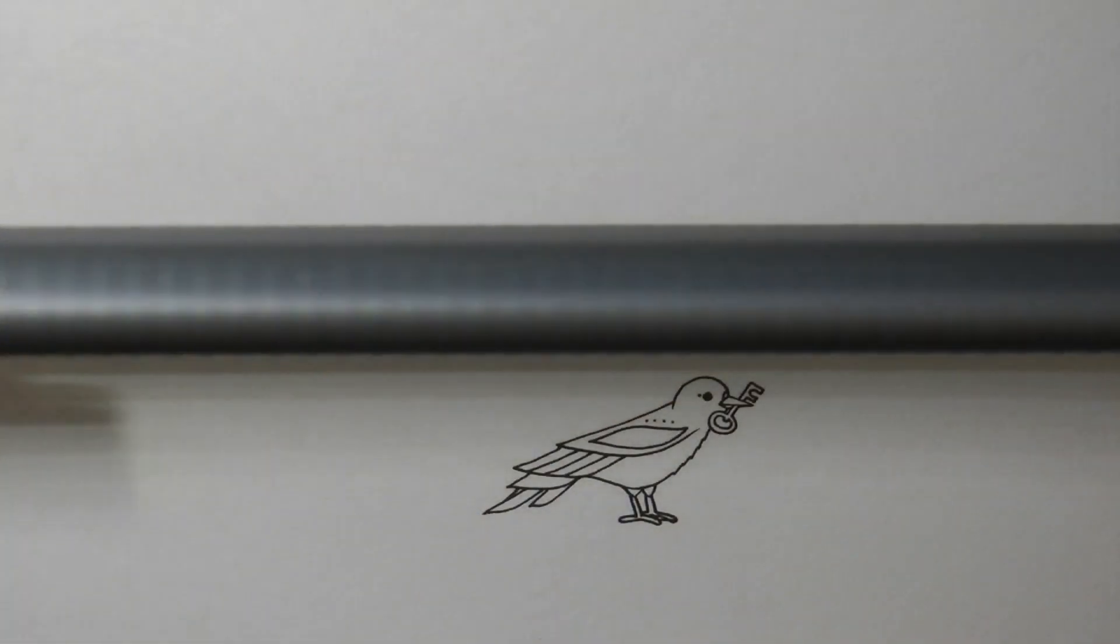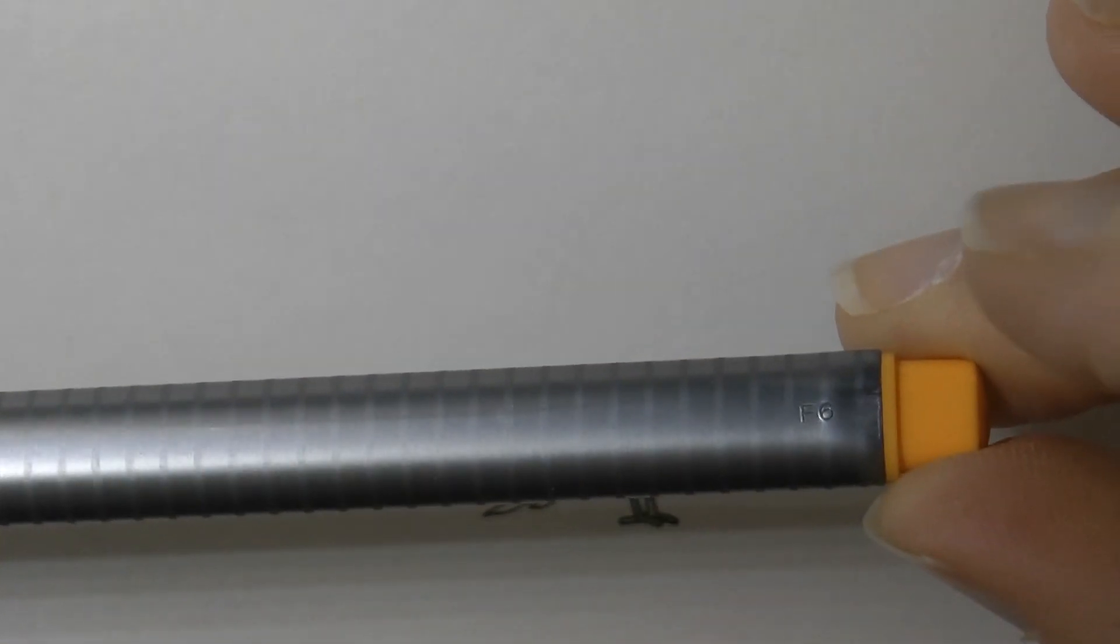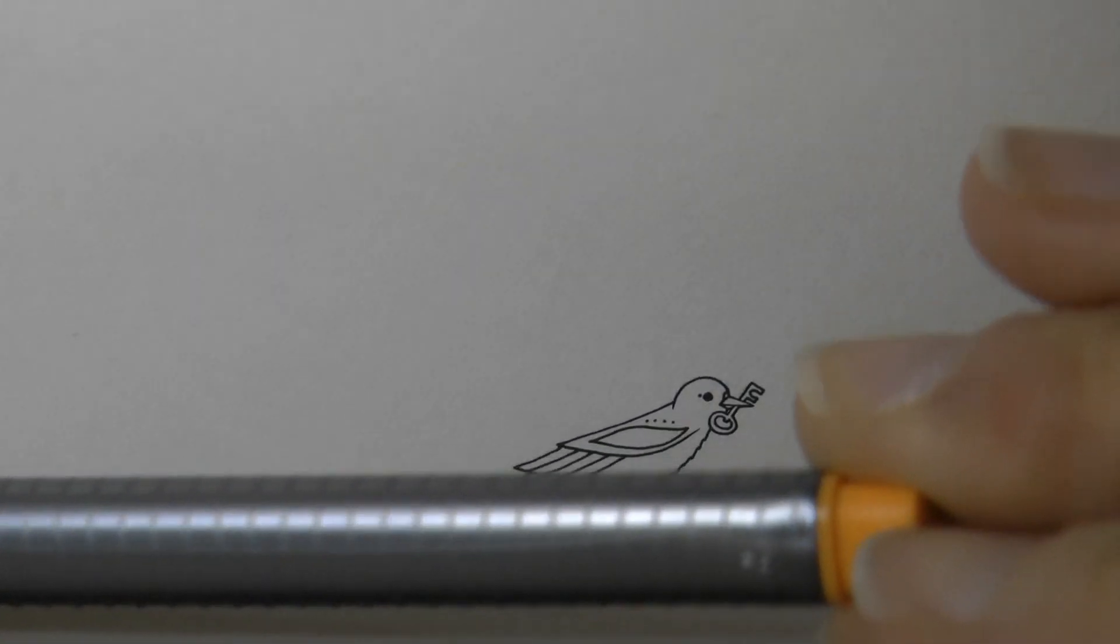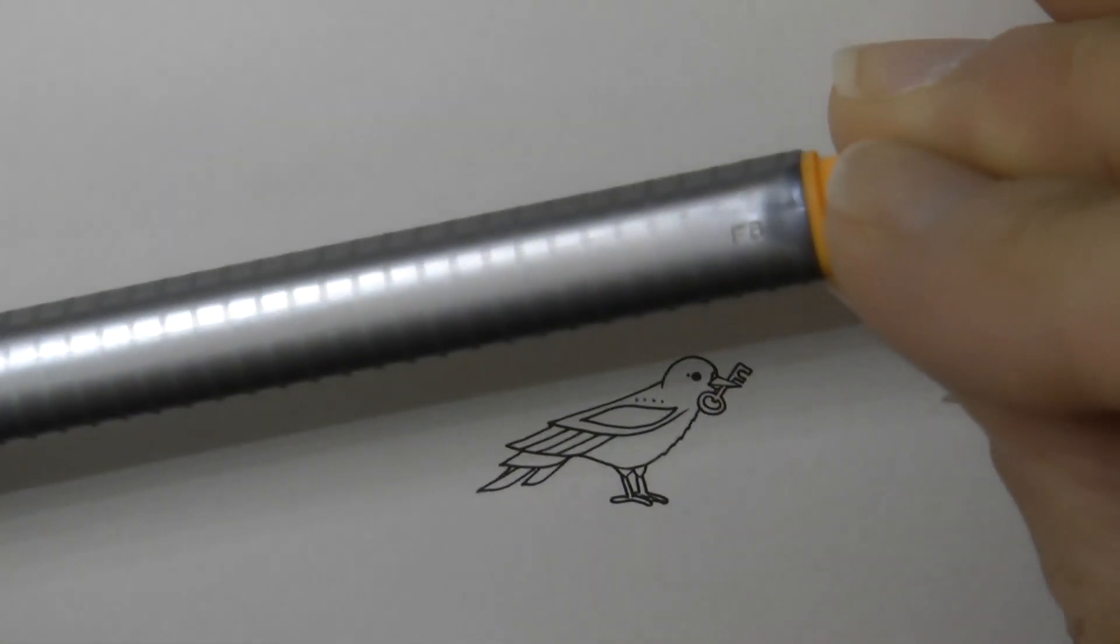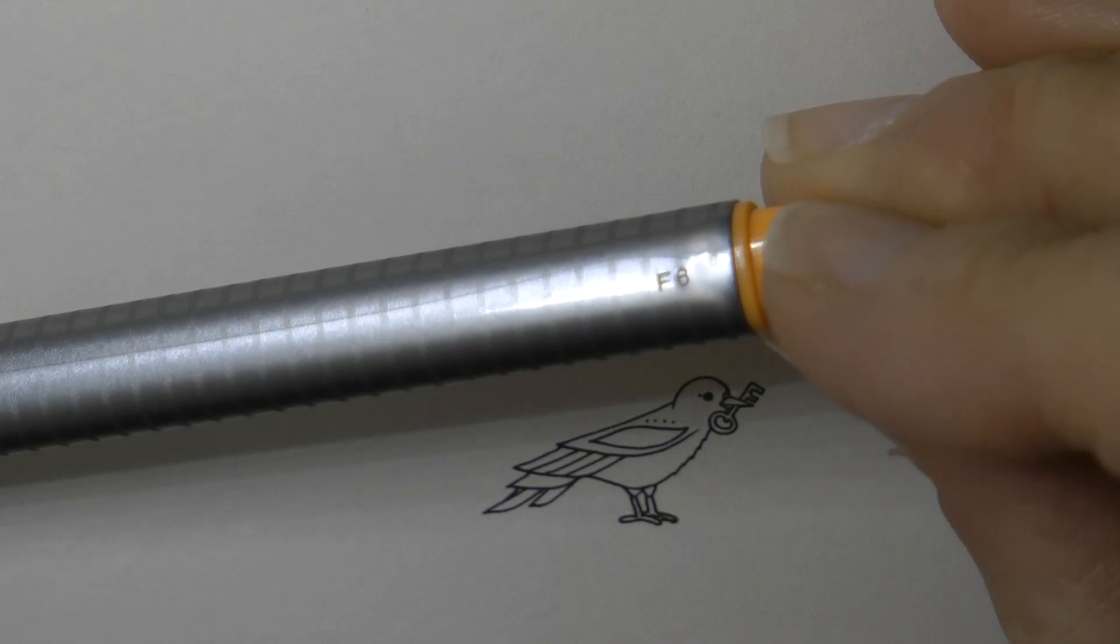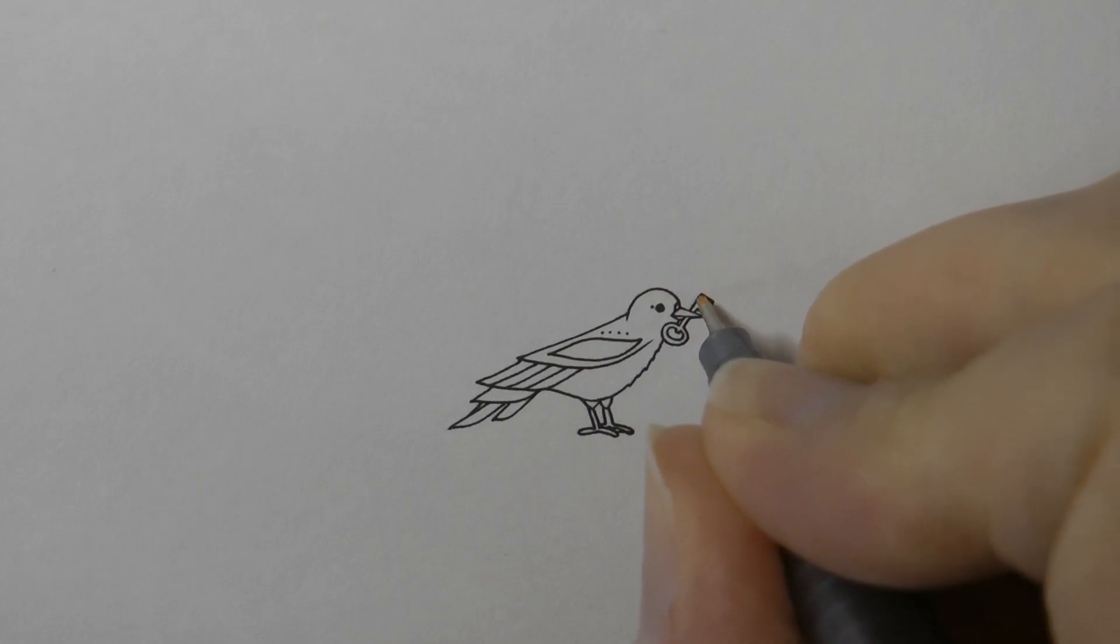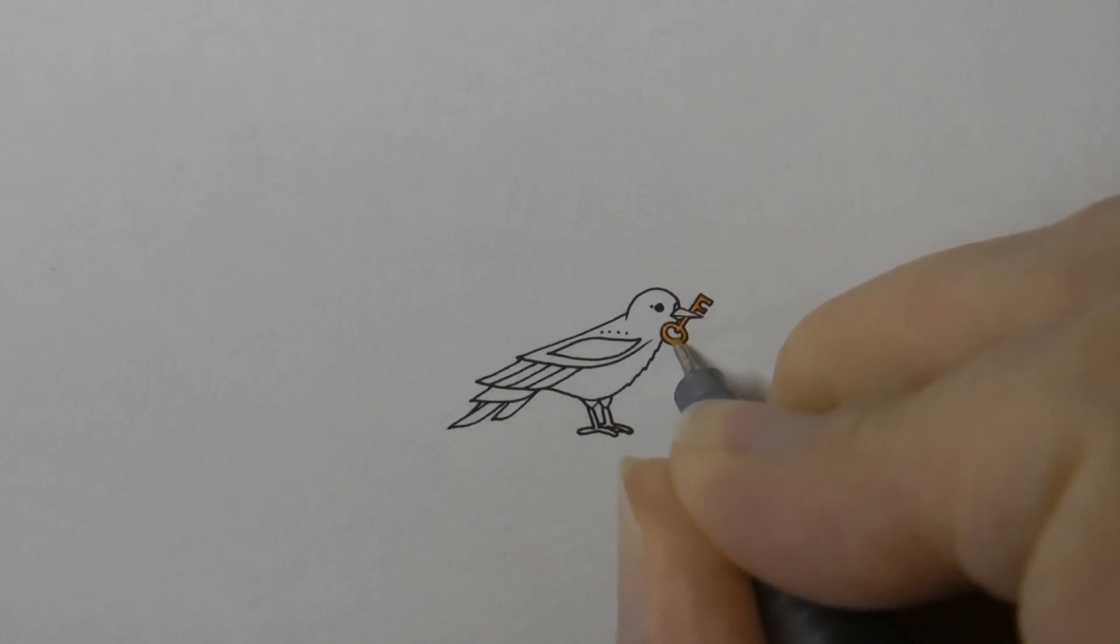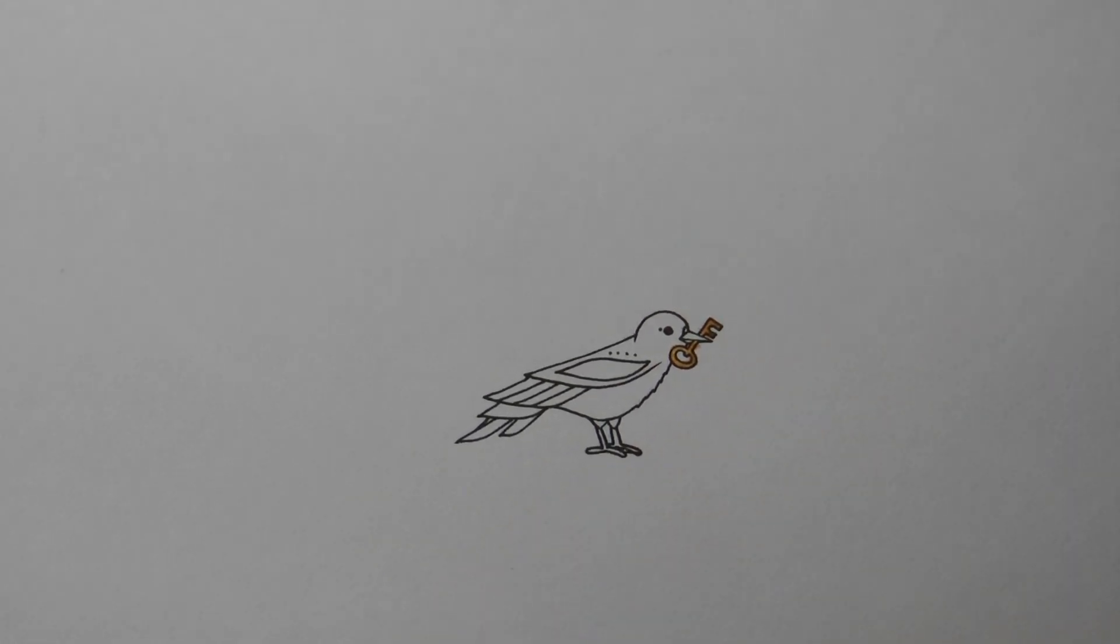So I've got this orangey yellow fine liner, this is Stedler Tripluss. I know some people can find the numbers on the bottom, there's something written there. F6 I think it is. Might be an 8. Anyway, I'm going to use that for the key. I'm going to do that first. It's very, very tiny but I thought I would just do it first. Now I had been tempted to use a gold gel pen but I don't think my gold gel pen would fit in that space to be honest.